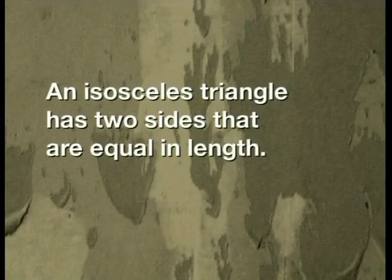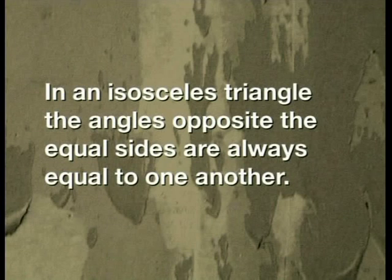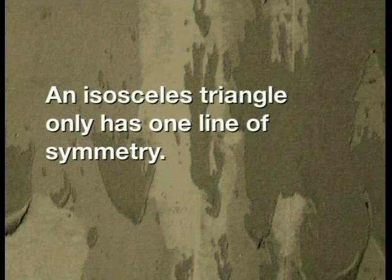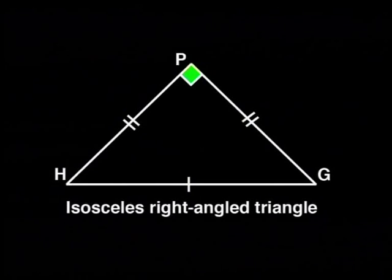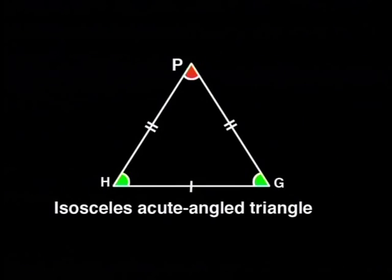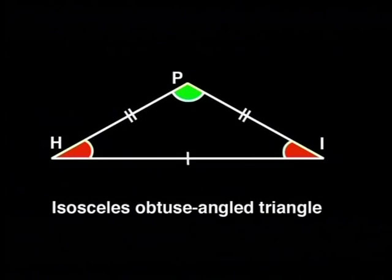Let's recap what we have learned today. An isosceles triangle has two sides that are equal in length. In an isosceles triangle, the angles opposite the equal sides are always equal to one another. An isosceles triangle only has one line of symmetry. There are three kinds of isosceles triangles: isosceles right angle triangle, isosceles acute angle triangle, and isosceles obtuse angle triangle. Thank you for joining me today. I look forward to seeing you in our next lesson where we investigate the equilateral triangle.